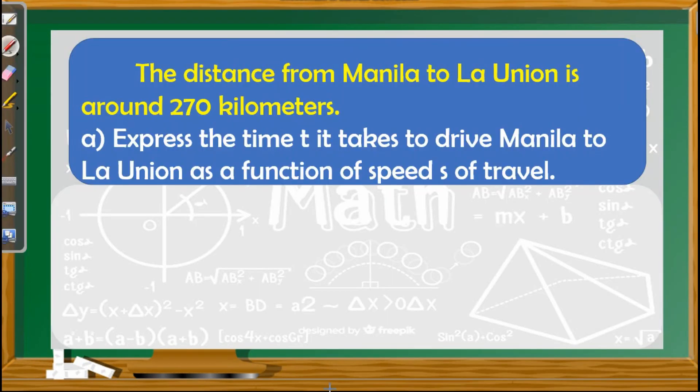The first problem is all about distance. The distance from Manila to La Union is around 270 kilometers. Express the time it takes to drive from Manila to La Union as a function of speed s of travel. Looking at this, we have three concepts: distance, time, and speed.